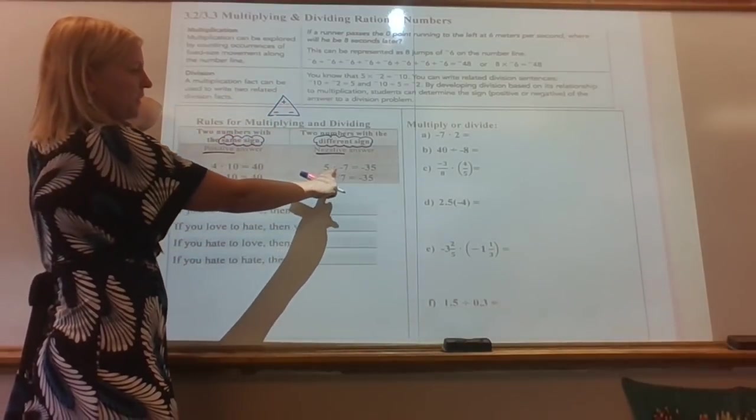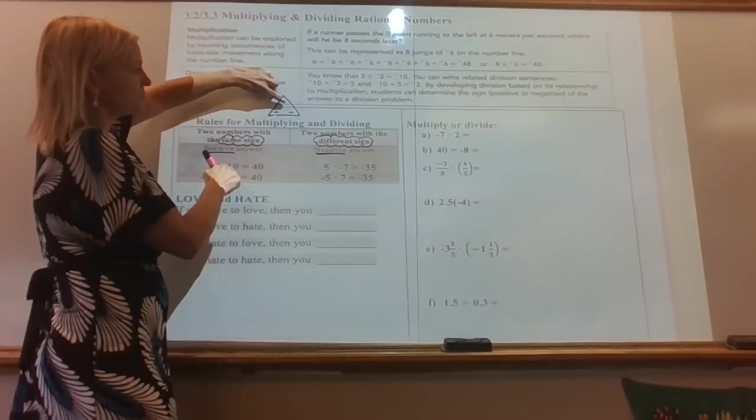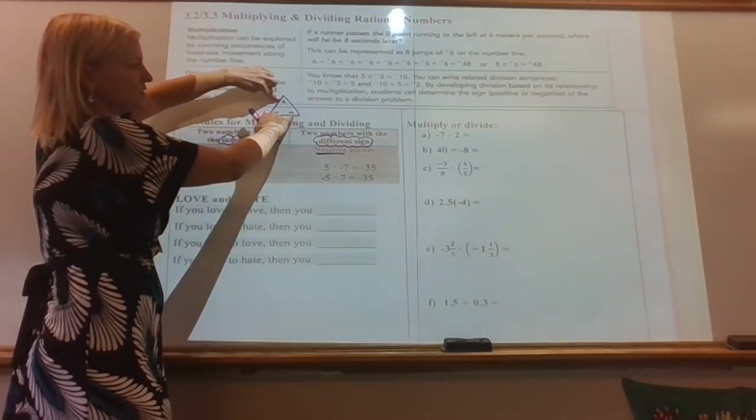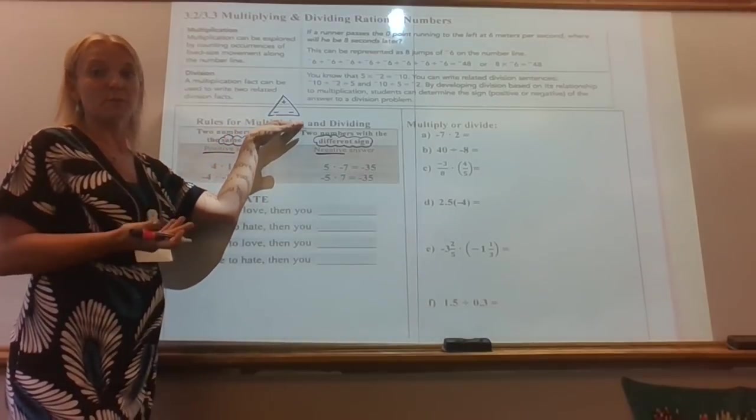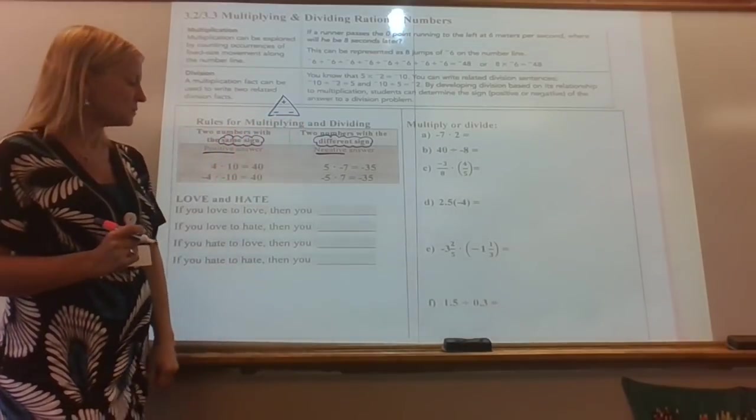Say I'm doing negative four times negative ten. That's a negative times a negative. I put my finger on the two that I'm multiplying. What's left over is the sign of your answer. So negative times negative makes a positive. If I have positive five times negative seven, the answer would be the negative. So that's a little trick that specifically works just for multiplying and dividing.